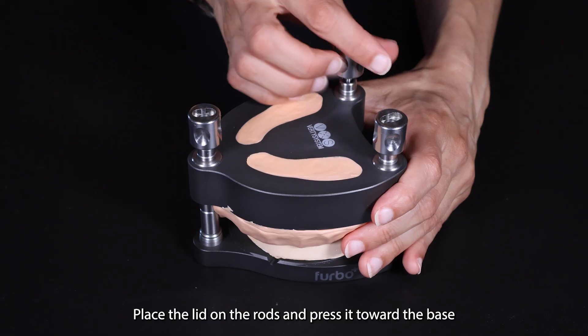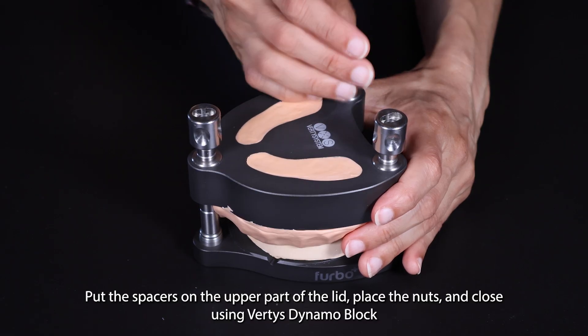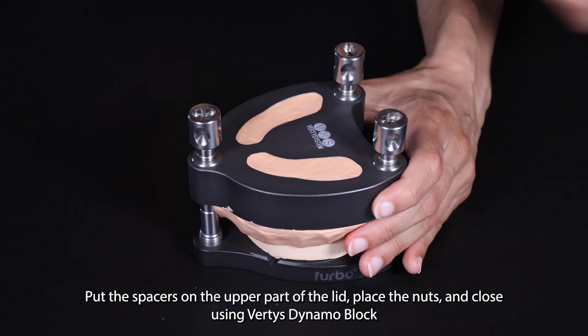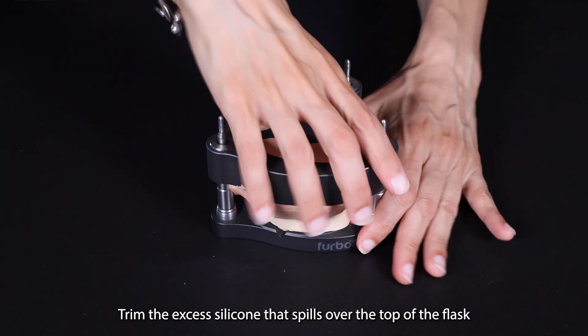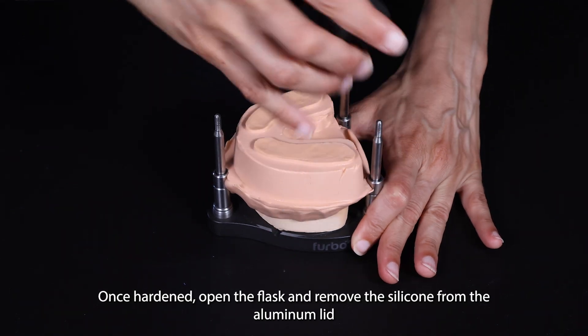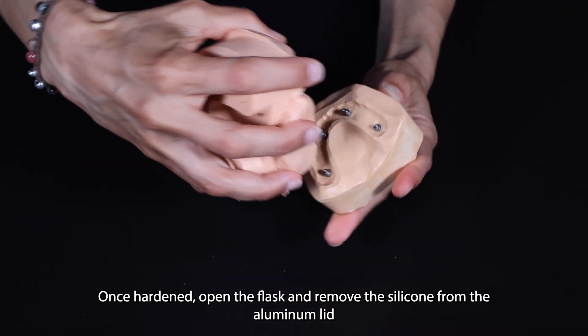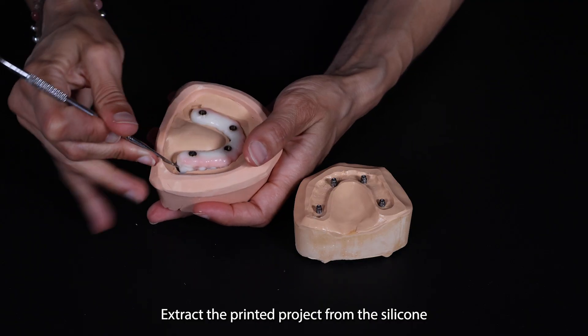Place the lid on the rods and press it toward the base. Put the spacers on the upper part of the lid, place the nuts, and close using Vertis Dynamo Block. Trim the excess silicone that spills over the top of the flask. Once hardened, open the flask, remove the silicone from the aluminum lid, and extract the printed project from the silicone.